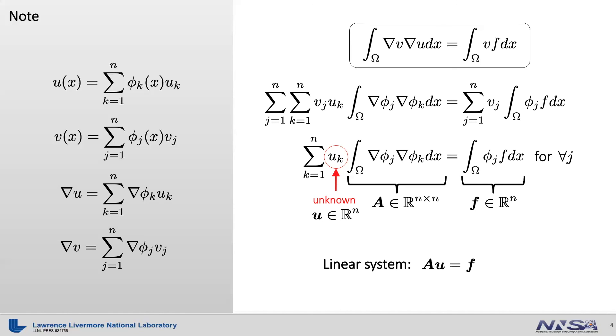By solving for the unknown vector U here, you will find a specific value for each U sub K. Then, you can plug this into this expression to find out the solution function U for the weak form. This whole process can be done by an example in Libram. Please check out the link below for the example file in Libram GitHub.